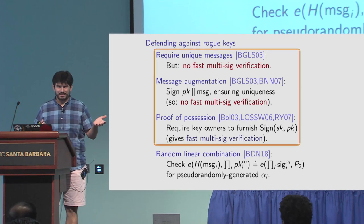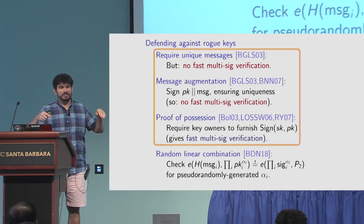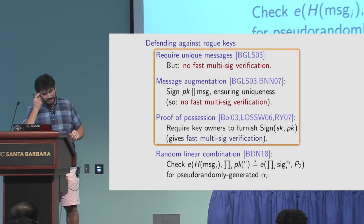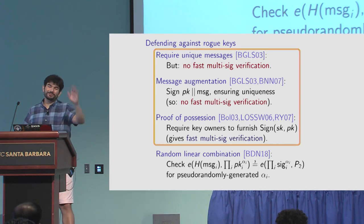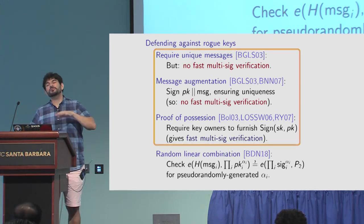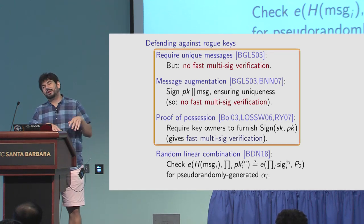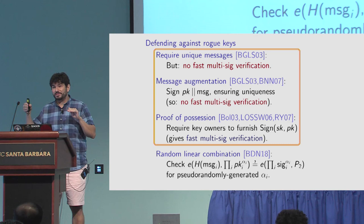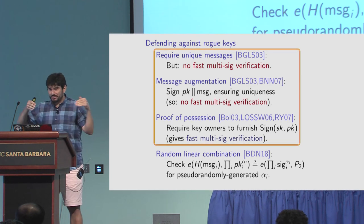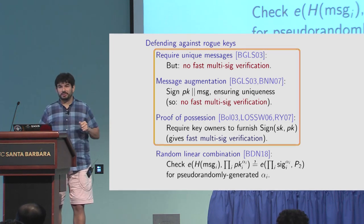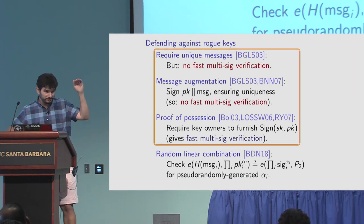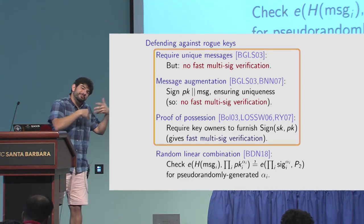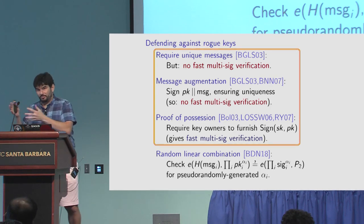In the standard we're going to standardize the first three approaches. You might ask why include both unique messages and message augmentation when augmentation already ensures uniqueness. The answer is paranoia: somebody will look at the standard and say proof of possession seems complicated, so they'll pretend to use it without actually generating proofs of possession. We don't want someone honestly using proofs of possession to get confused with incorrectly implemented variants. So we have domain separation between all three cases - unique messages, message augmentation, and proof of possession - building a firewall between people who may or may not do things right and those who hopefully are.